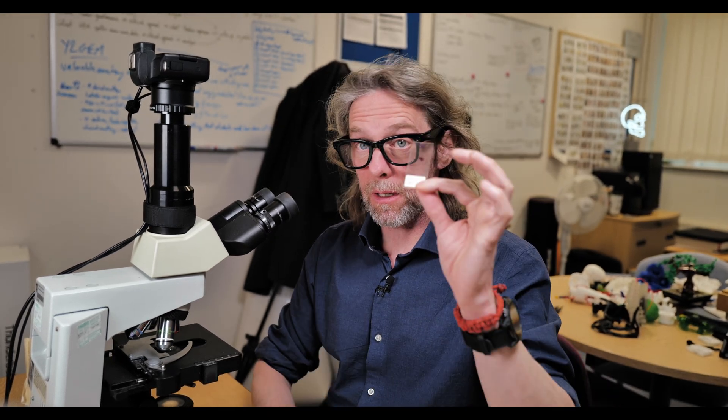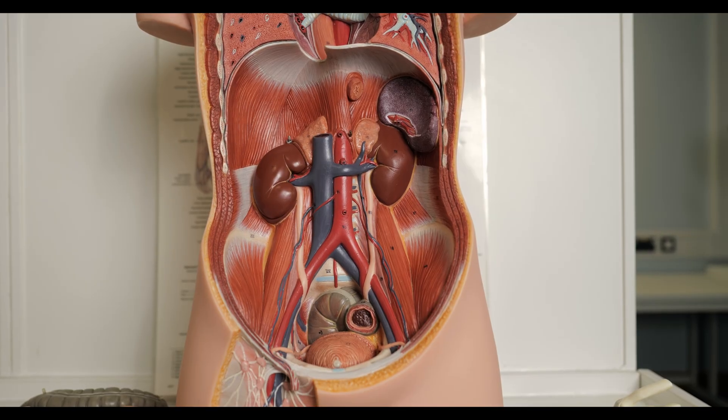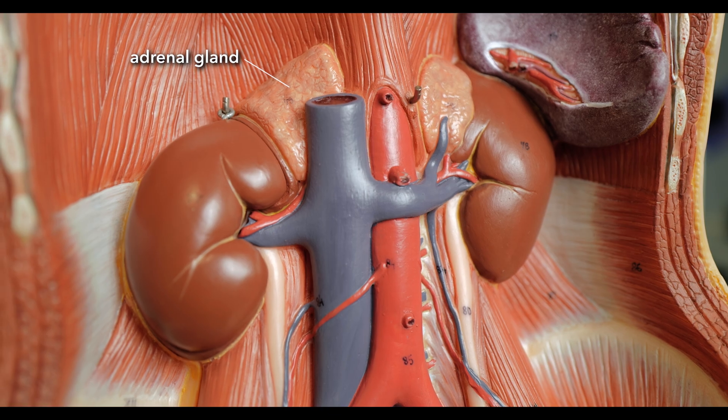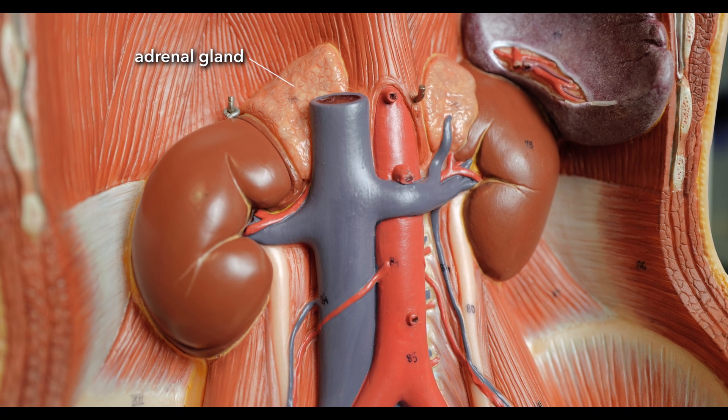We're going to look at the adrenal glands, or the suprarenal glands — so named because 'renal' means kidney. These glands are found on top of the kidneys, so they are adrenal or suprarenal. They make adrenaline, or epinephrine — 'epi' meaning upon the kidney. This is how adrenaline got its name.